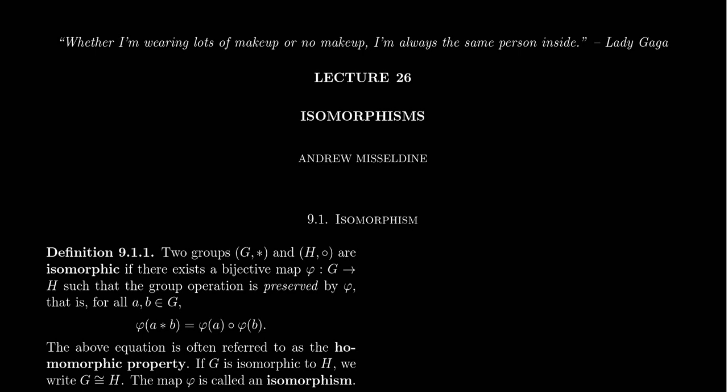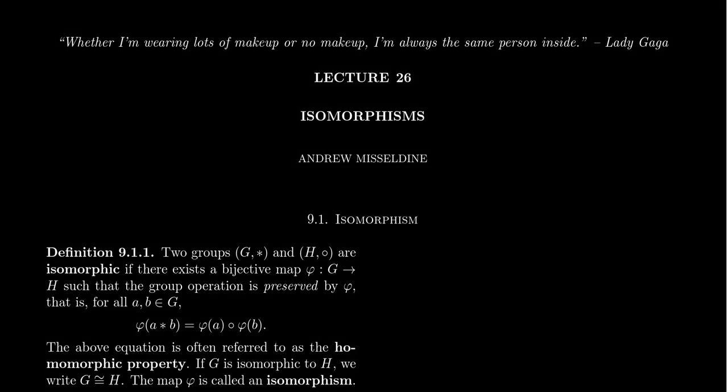Welcome back to our lecture series, Math 4220, Abstract Algebra 1 for students at Southern Utah University. I'm your professor, Dr. Andrew Misseldein. Lecture 26 in our series starts Chapter 9 of Tom Judson's Abstract Algebra textbook, which seems like a short chapter with only two sections. We'll actually spend four lectures talking about the topic of isomorphisms.